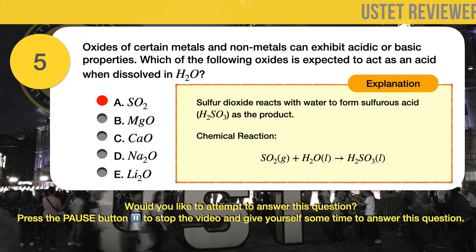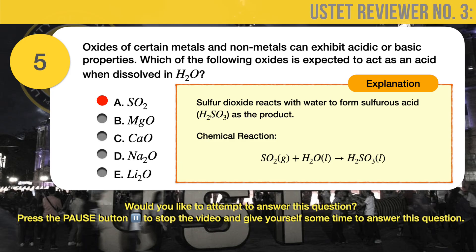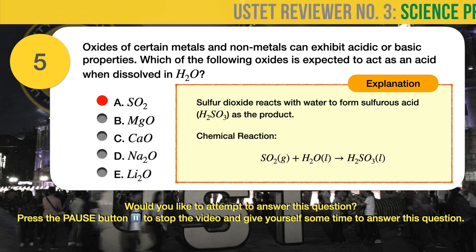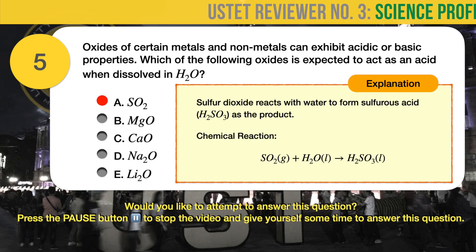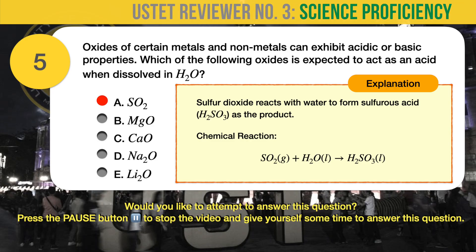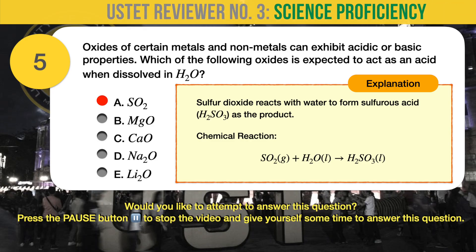The chemical reaction is as follows: SO2 (gas) plus H2O (liquid) results in H2SO3, a liquid and an acid.